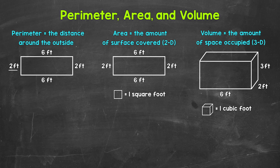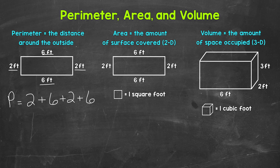We have 2 feet, 6 feet, 2 feet, and 6 feet. So perimeter equals 2 feet plus 6 feet plus 2 feet plus 6 feet. Now, it does not matter what order you add the side lengths in.